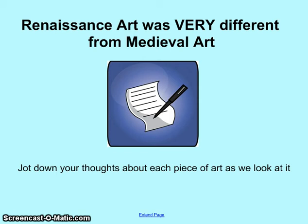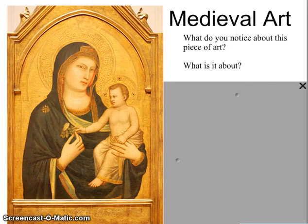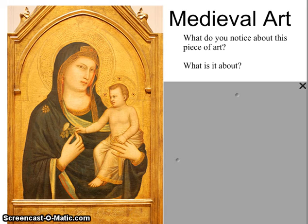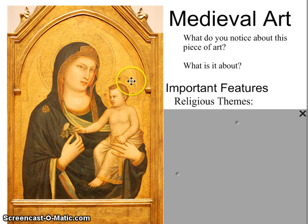As we go through these paintings, I want you to take a minute and pause the video, write down your thoughts about what each piece means, and then we'll talk about it. Here's the first piece — take a look at the picture, pause the video, and write down what you think this piece is talking about and what you notice. Some of you might have commented on the colors — it's very gold. You might have noticed it's maybe a mother and son, and perhaps you notice that it's religious, with little halos that artists call a nimbus, indicating these figures are holy.